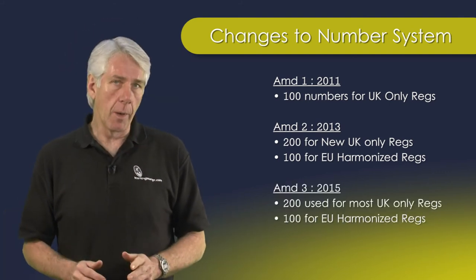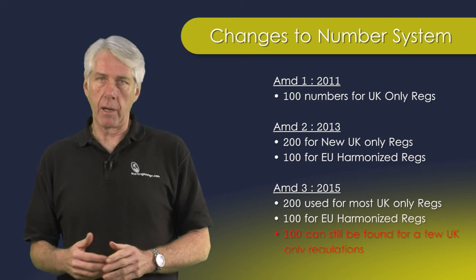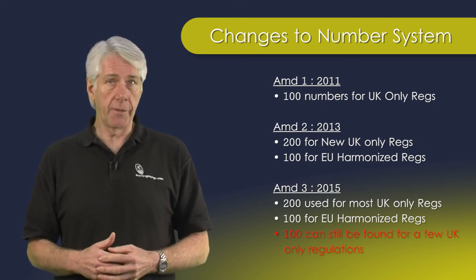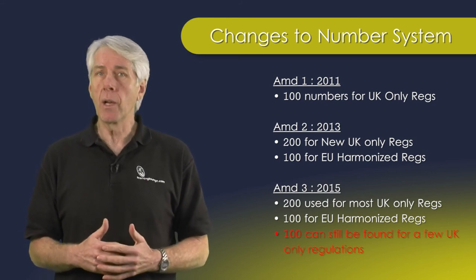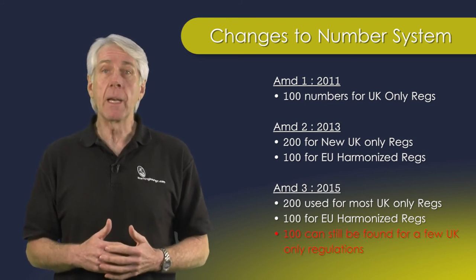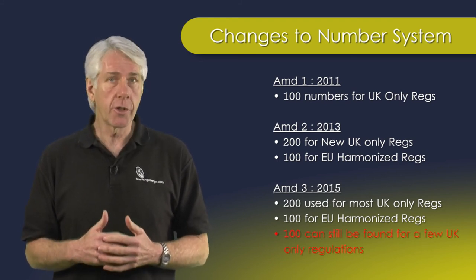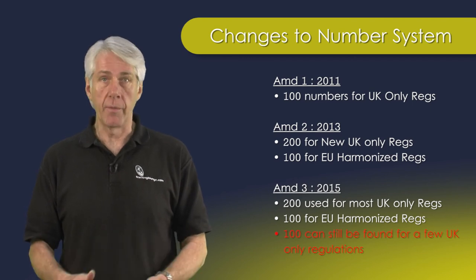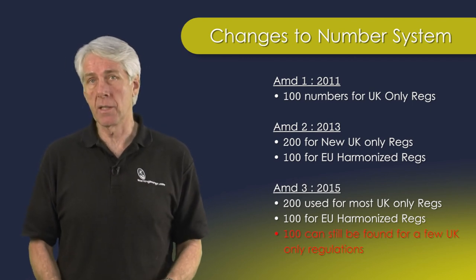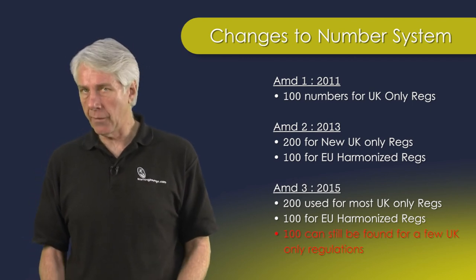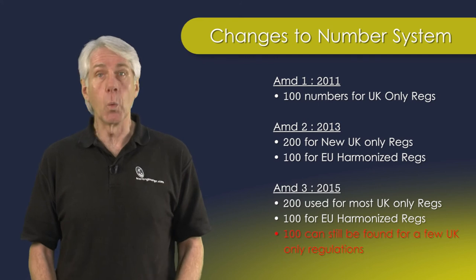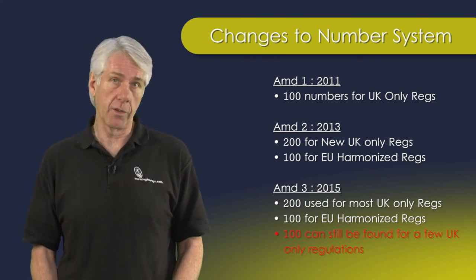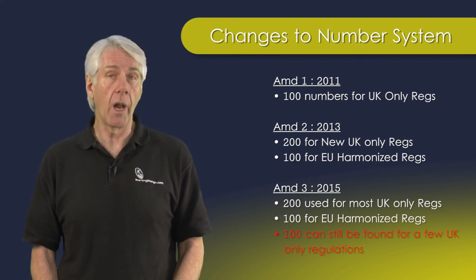With Amendment 3, most of the early regulations using 100 to identify UK-only regs have been updated to 200 numbers. However, there are still a couple of instances, especially in Part 7, where you will encounter UK-only regulations using 100.